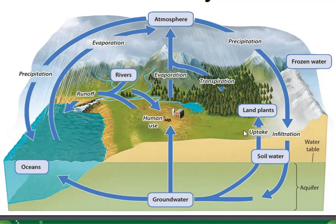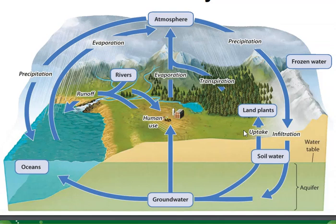Precipitation is the fancy word for rain. Water returns from the atmosphere to Earth's surface as precipitation in the form of rain or snow. It occurs when water vapor undergoes condensation — a change in state from a gas to a liquid. Water evaporates into the atmosphere, but once it gets high up, the water vapor cools down, turns back into a liquid, gets too heavy, and falls back down to the Earth as precipitation — rain or sometimes snow.